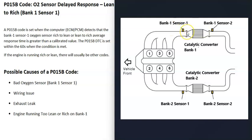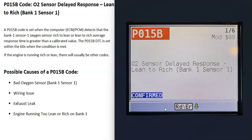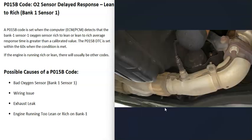When you get this code, the first thing to do is locate the bank one sensor one O2 sensor on your particular vehicle. One possible cause is that the O2 sensor has simply gone bad and needs to be replaced, so the first step is to test that sensor.